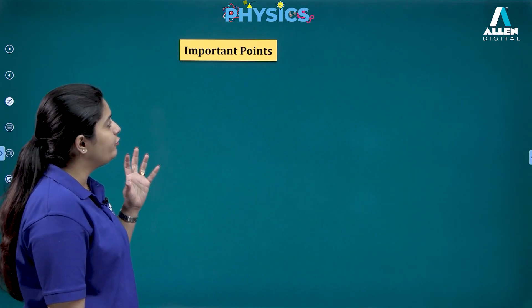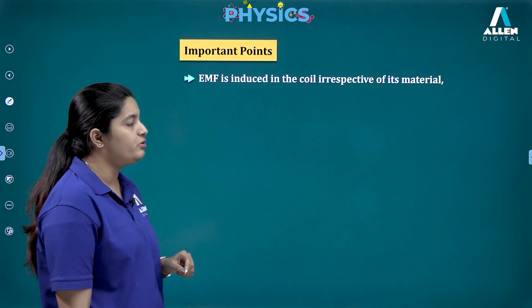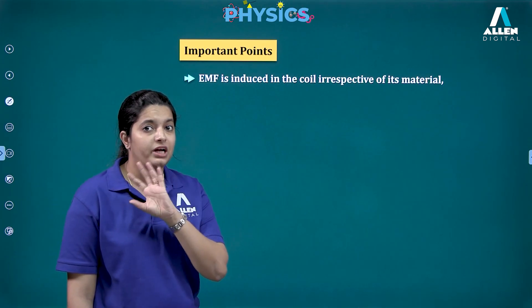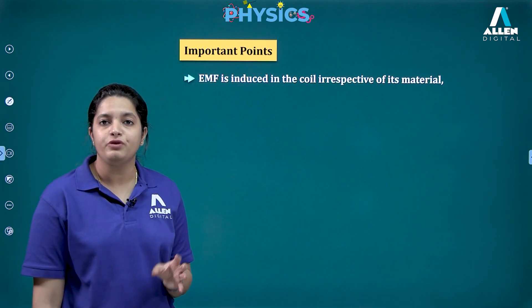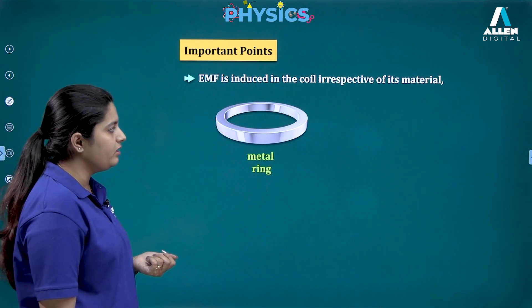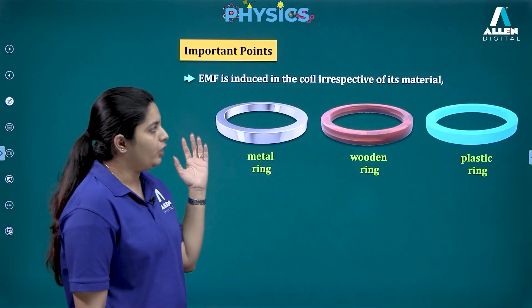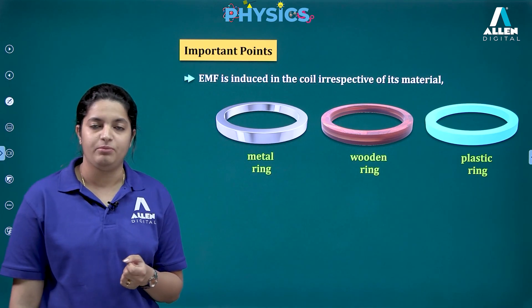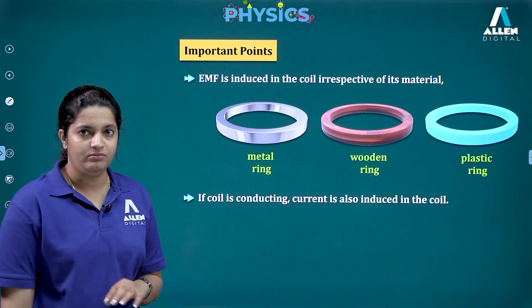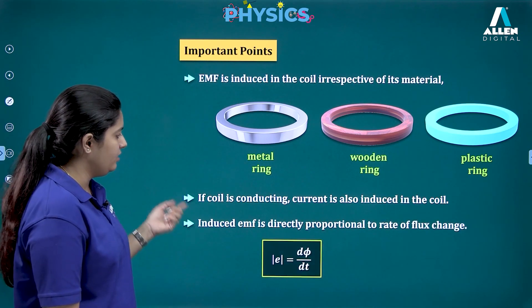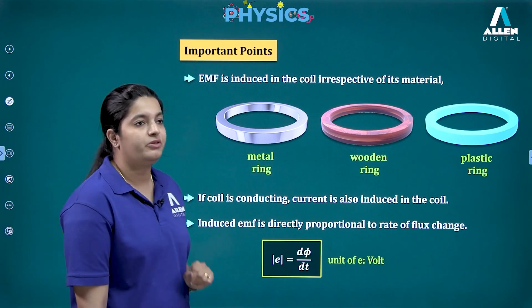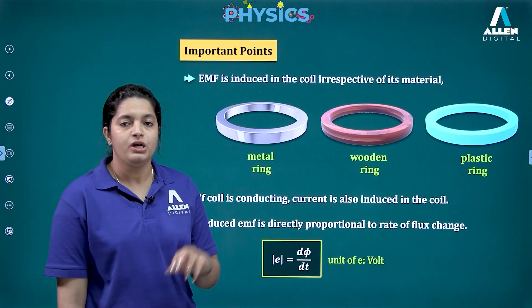A few important points about electromagnetic induction: First, EMF is induced in any coil irrespective of material — whether conducting or non-conducting, EMF will always be induced. But current will only be induced if the material is made of a conducting material and it is a closed loop. Whether a metal ring, wooden ring, or plastic ring — induced EMF can form, but current only flows in a conducting closed coil. The unit of EMF is the same as potential difference — the volt.